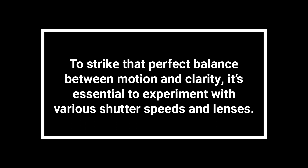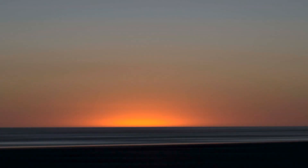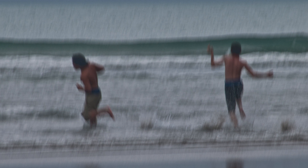To strike the perfect balance between motion and clarity, it is essential to experiment with various shutter speeds and lenses. Start with a shutter speed of around 1/15 of a second as a baseline, and then capture a series of shots at different speeds to gauge the impact on your photos. Observe how each setting influences the final outcome and how they interact with your chosen lens. Remember, there is no one-size-fits-all approach. The ideal shutter speed and lens combination depends on your artistic vision and the specific scene you are capturing, so don't hesitate to explore and push the boundaries of your creativity. With practice and experimentation you will discover the perfect blend of motion and clarity to truly bring your intentional camera movement shots to life.